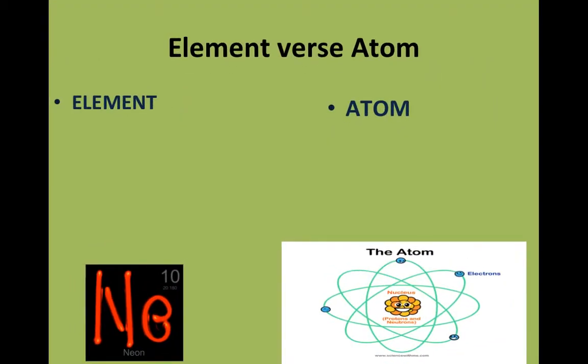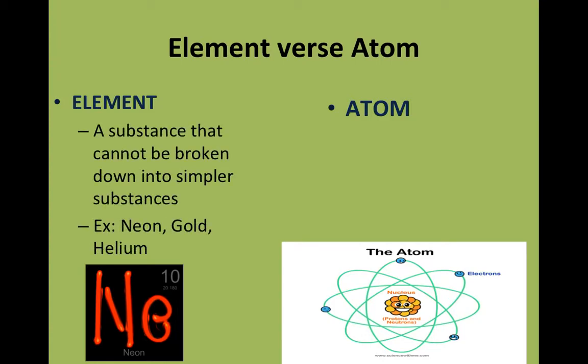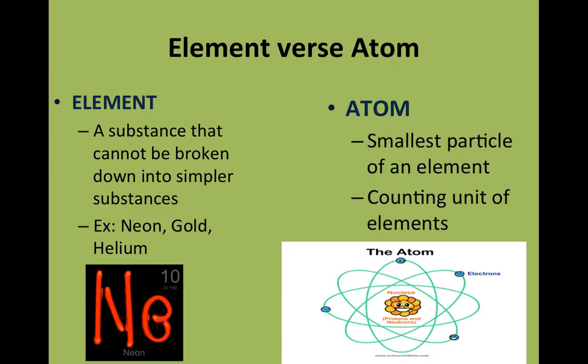The first thing that we have up here is an element versus an atom. When we look at an element, an element is a substance that cannot be broken down into any simpler substance. It's about as low as it can go. Our atom is the smallest particle of the element. For instance, if I held up ten wooden rulers, one wooden ruler would represent the element. If I held up ten of them, then that would show me ten atoms of that element.